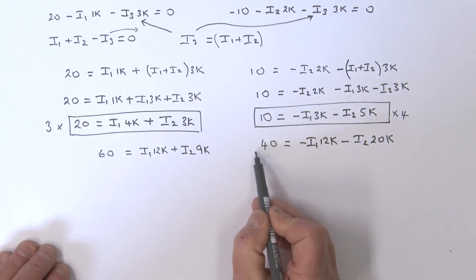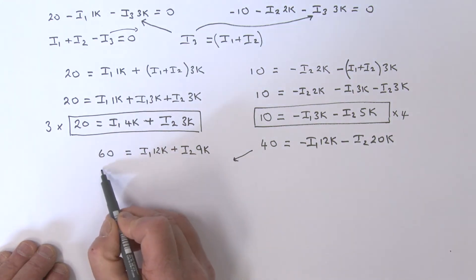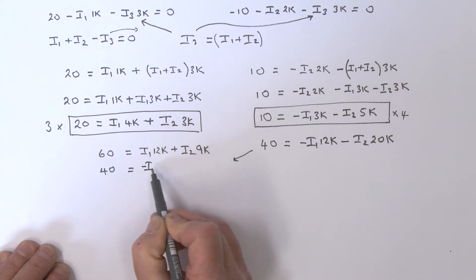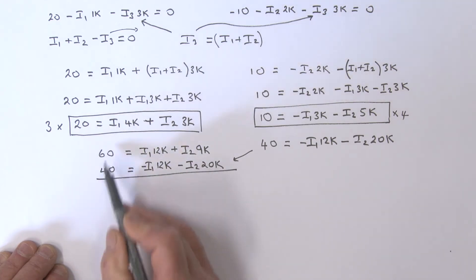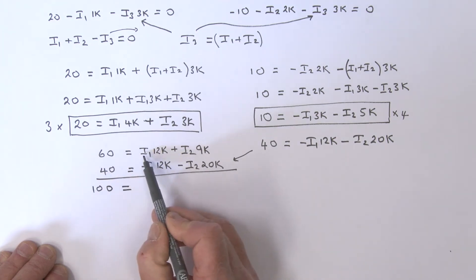Suppose I take this equation and rewrite it here. So I've got 40 equals minus i1 times 12k minus i2 times 20k. And suppose I just add these together. So 40 plus 60 is 100, and that equals - well, that's a plus 12k and a minus 12k. That's gone.